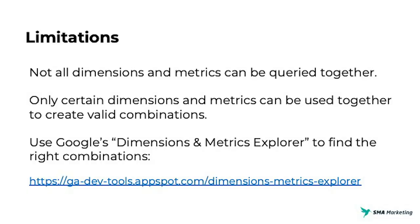Not all dimensions and metrics can fit together, and sometimes it can be confusing about what can be used together and what can't. There are times where you run into limitations, even with tools like Data Studio, which allows you to pull a lot more data directly from Google Analytics. So it's important to understand which dimensions and metrics work together. Google has a really cool tool that allows you to select some dimensions and it'll highlight the different metrics that you can use to do more investigation with your data. Check out the link on the screen — I'll also put it below in the description — so you can begin to see which metrics and dimensions work together.